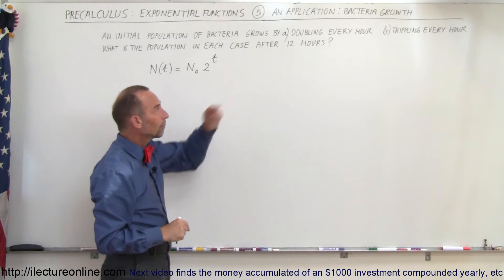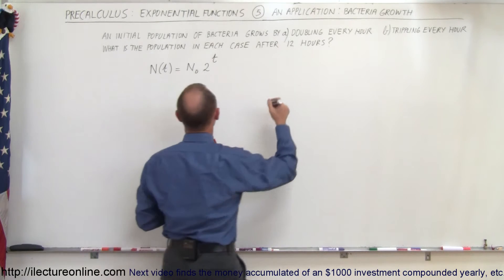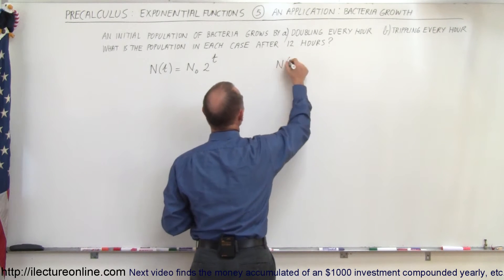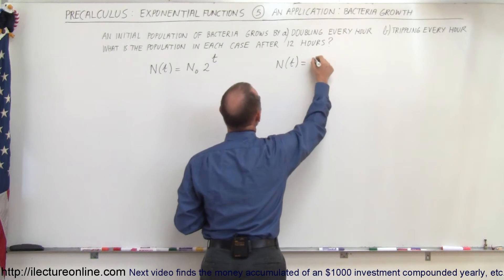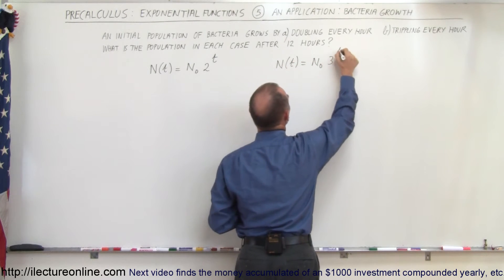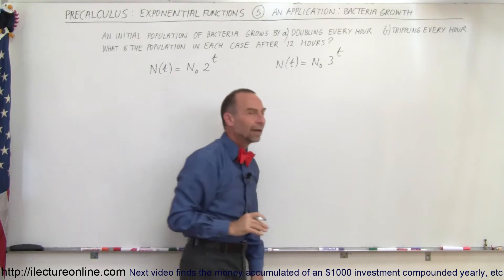For part b, where we want to triple every hour, the equation looks as follows. The number of bacteria as a function of time, N(t), equals the initial amount times 3 raised to the t power, because we're tripling every hour.